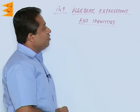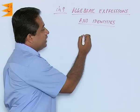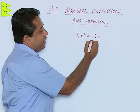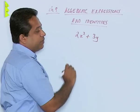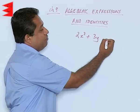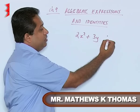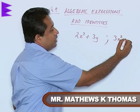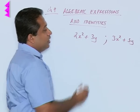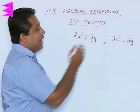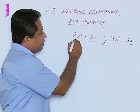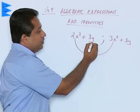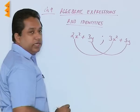Let us consider adding of polynomials. Let us consider 2x square plus 3y. This is one expression given to us and we have to add it to another expression, that is 3x square plus 5y. Now, if we were to add this, then 2x square and 3x square are like terms, and 3y and 5y are like terms.